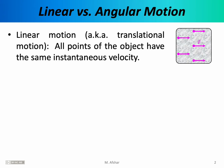So far in the semester we've been considering mostly linear motion, also known as translational motion. In linear motion all points of the object have the same instantaneous velocity. They're all moving in the same direction with the same speed at any given instant in time. For example, consider the motion of a box as it slides across the floor. Every point of that box would have the same velocity vector. The box might slow down and speed up but all the atoms do so together.